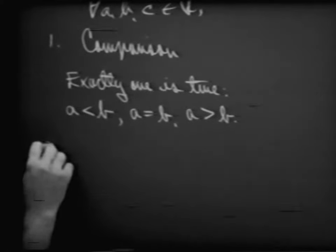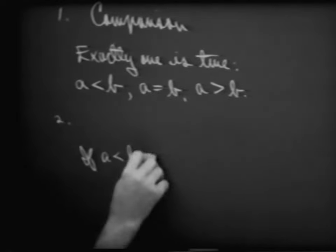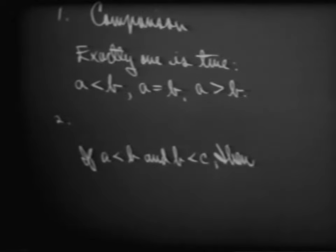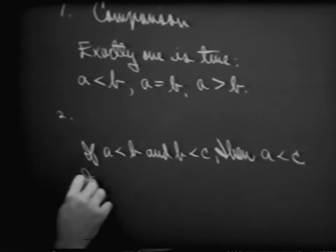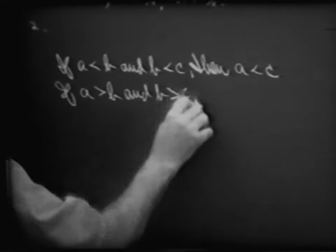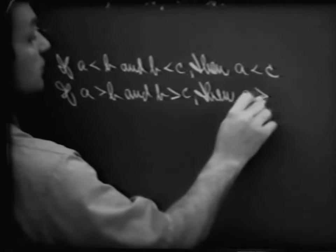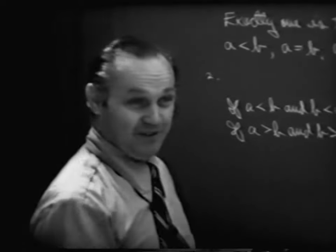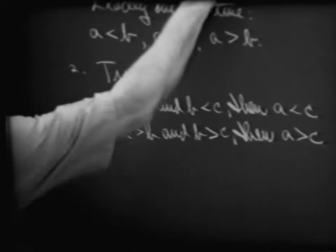There are a number of other axioms we may look at. If A is less than B and B is less than C, then we can conclude that A is less than C. We may also write this the other way: if A is greater than B and B is greater than C, then A is greater than C. This is our transitive axiom with respect to inequality.